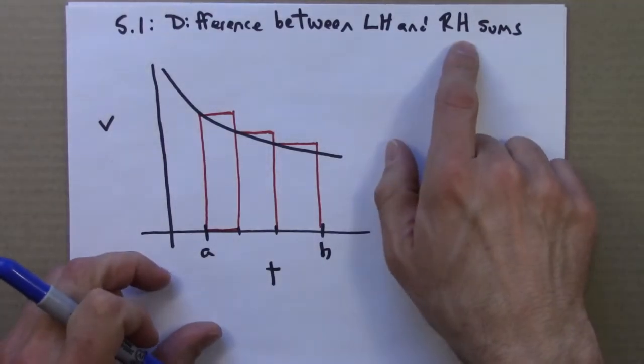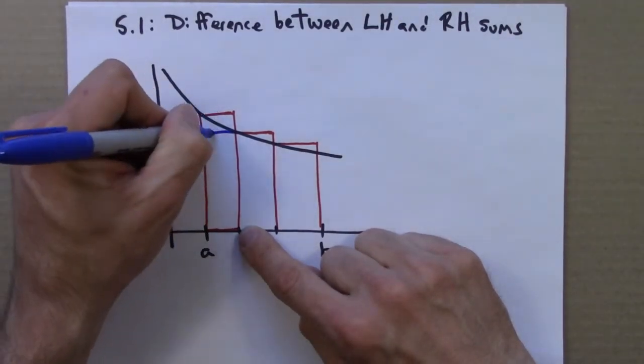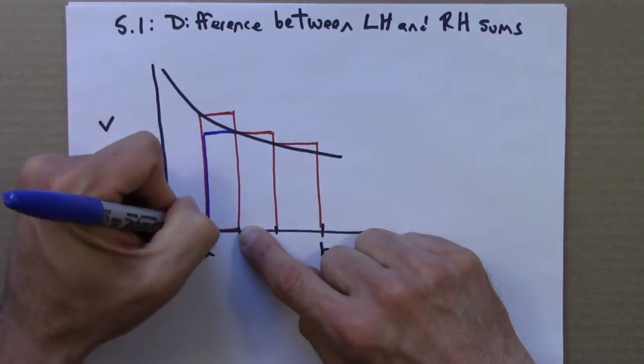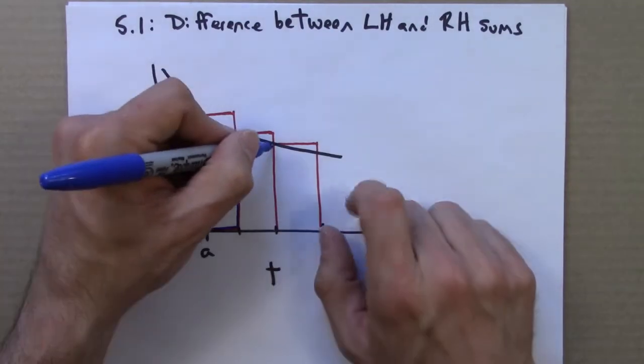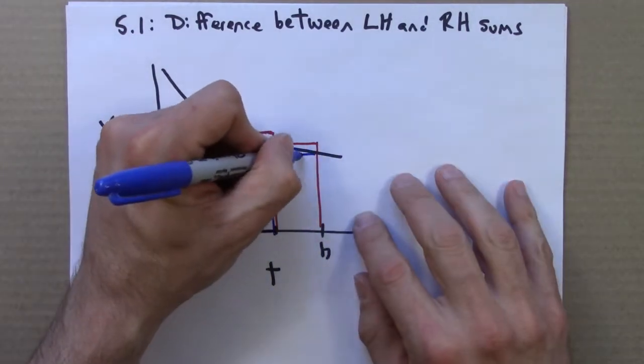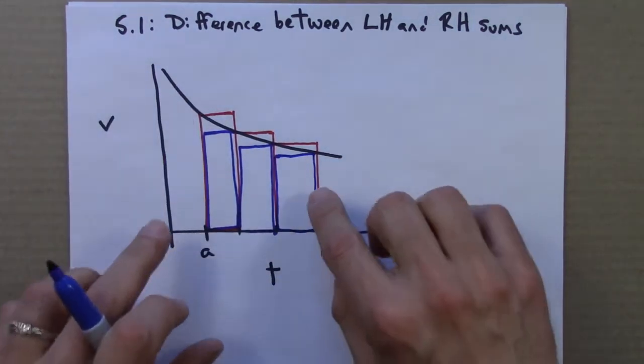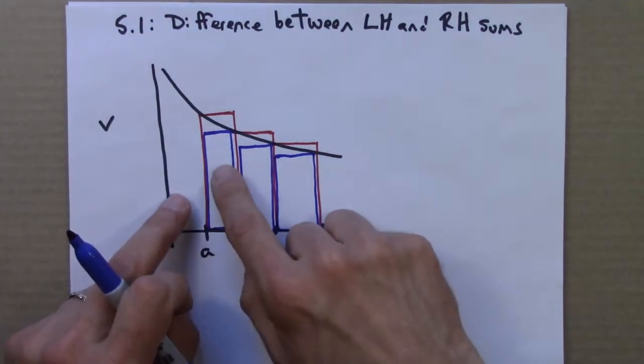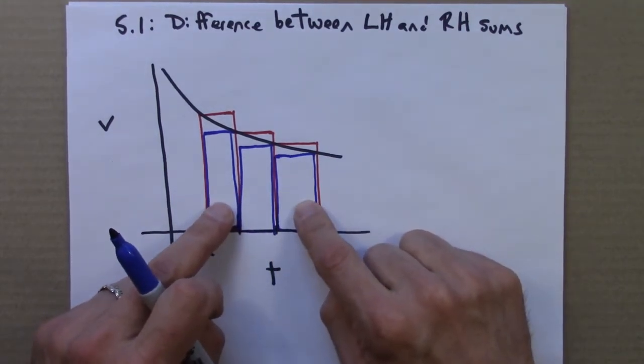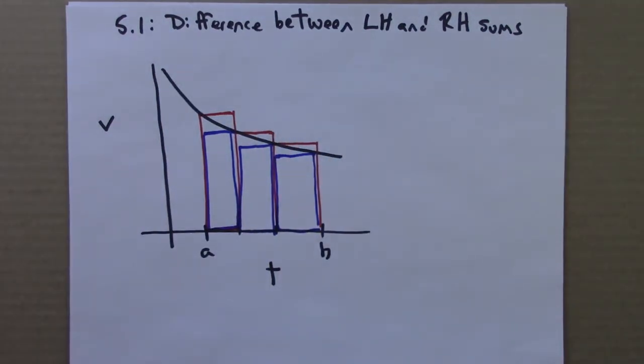We can also do a right-hand sum. So same sort of thing. We're going to pretend that the speed is constant between my two fingers, but now we're going to pretend it's constant at the right-hand value. So I build a rectangle using the right value. And I do the same thing here, and the same thing here. So all of these blue rectangles, that's our underestimate for how far the cat goes. And all of these larger red rectangles are our overestimate for how far the cat goes.